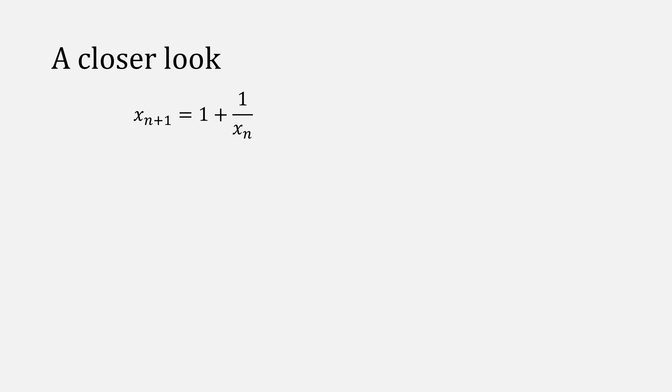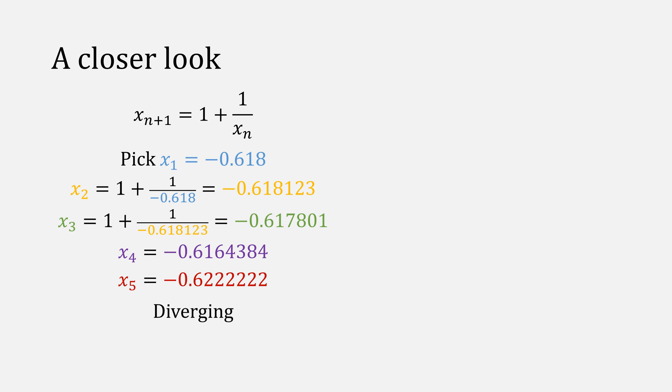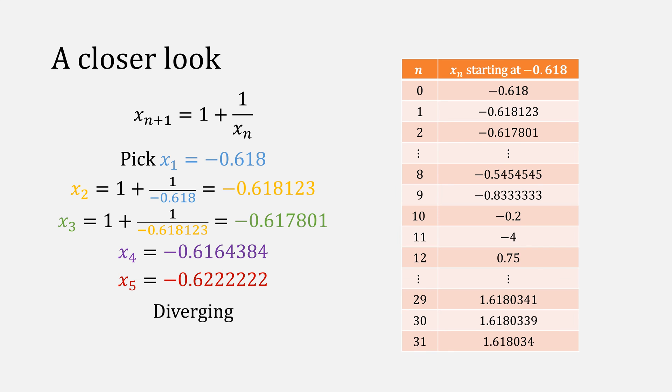If we take our original function and start very close to our second root, this appears to be diverging, which we would expect since it failed the test with this root. If we do a closer inspection and keep iterating, eventually the function converges on our original root.